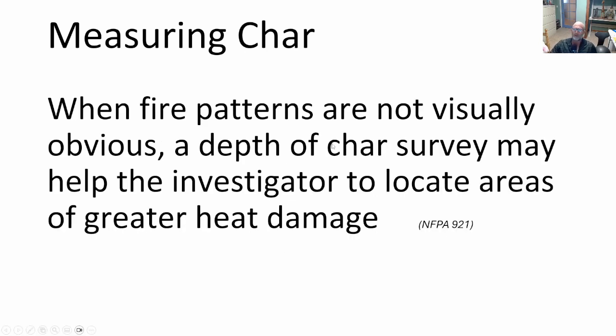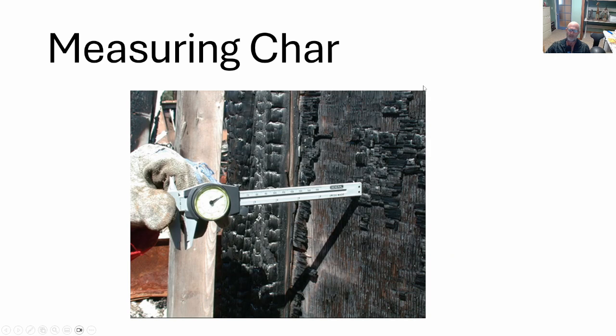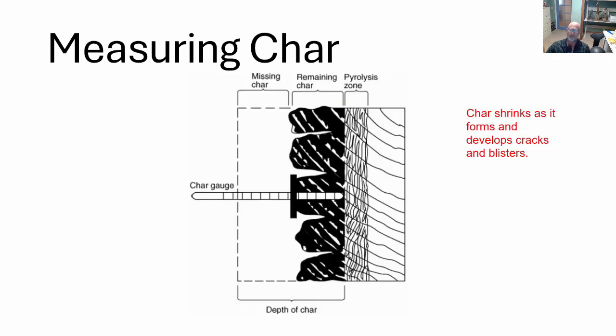When fire patterns are not visually obvious, you can use depth of char in terms of a survey, almost a map, to help identify where that origin occurred. This is a caliper, a standard caliper used for these kind of analyses. There's a probe on the back end that allows you to set or probe into the char. Char is kind of weak - you can actually penetrate it by applying a little bit of pressure with a probe pole. Here's an example demonstrating just that from NFPA 921. Char depth is actually measured not from the cracks that develop. Char shrinks as it forms and develops cracks and blisters. Look for the solid char in performing this depth analysis.